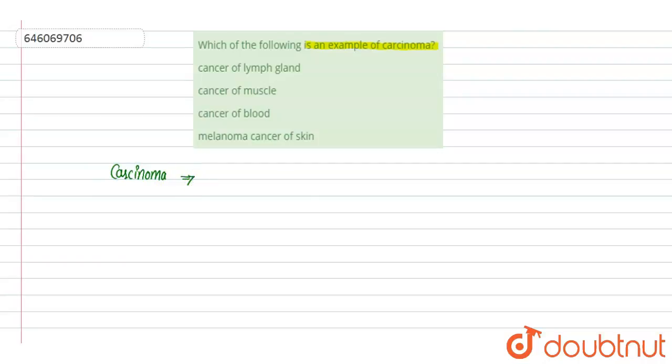Carcinoma is one of the most common types of cancer that occur in the body. It begins in the epithelial tissue of the skin.